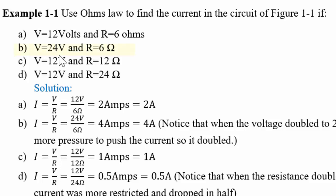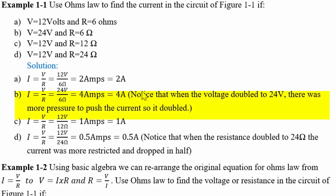In the second case, we're doubling the voltage, so now we've got 24 volts over 6, and we end up with 4 amps. Notice when the voltage was doubled, there was more pressure to push the current, so the current doubled. In part C, let's leave the voltage back at 12 and increase the resistance. That should decrease the current because it has a harder time getting through the circuit. So in that case, 12 over 12 ohms turns out to be 1 amp, which is one half. And then if we take the resistance and make it 24 ohms in part D, that cuts the current in half. Notice that when the resistance is doubled to 24, the current was more restricted and it dropped in half.